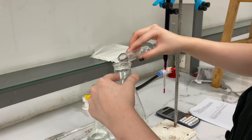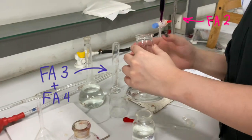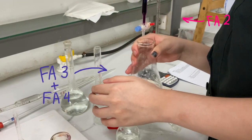So now, we've got the FA2 filled in the burette and a solution of FA3 and FA4 in the conical flask.